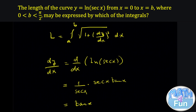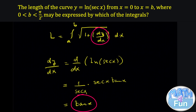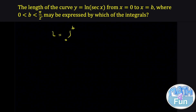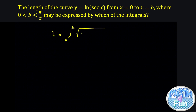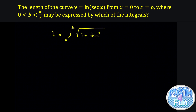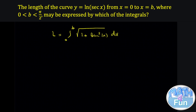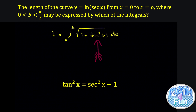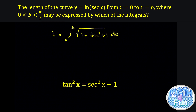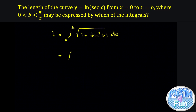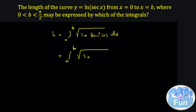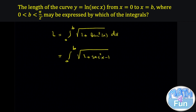According to the length formula, we replace dy/dx by tangent inside the formula, so it becomes l equal to the integral from 0 to b of the square root of 1 plus tangent squared of x, dx. We can simplify further by replacing tangent squared x with secant squared x minus 1, so that the minus 1 and plus 1 cancel.